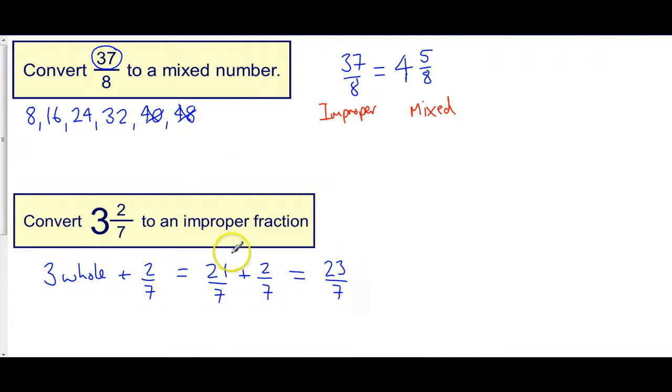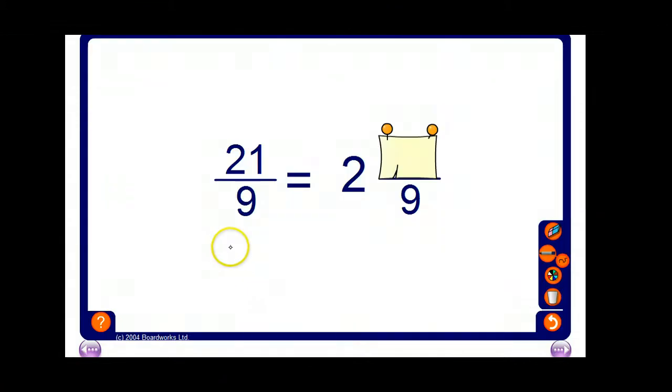So let's have a look and see how we get on. Let's have a look here, 21 over 9. So let's think about our 9s. Our 9s go 9, 18, 27 is too many, isn't it? So that means we've got 1, 2 wholes, which we've got here, and then we were on 18, so we must have 3 ninths left over.